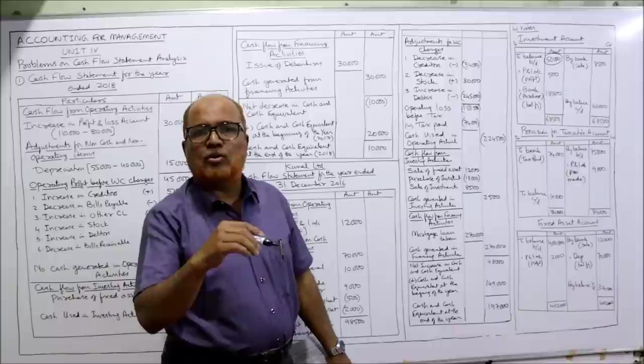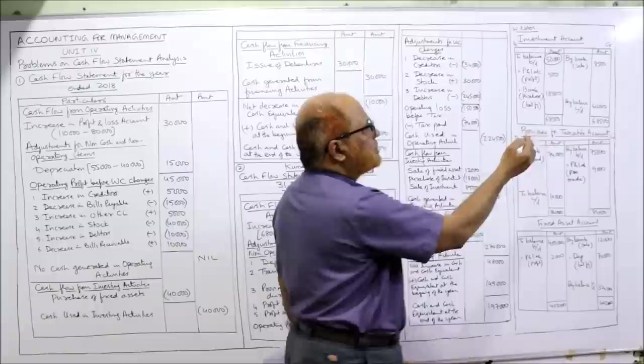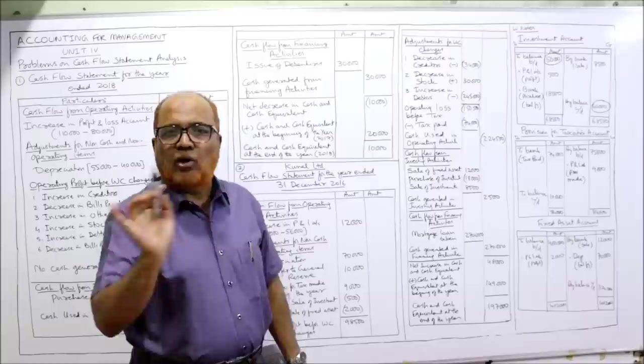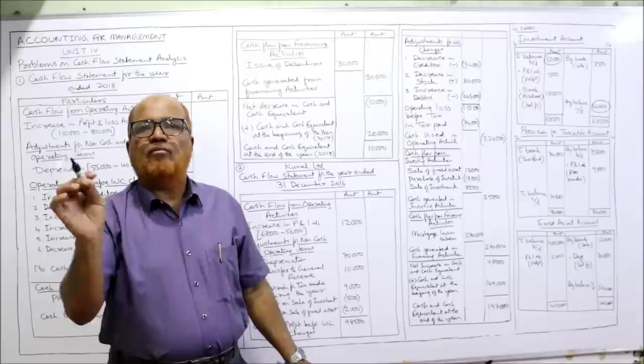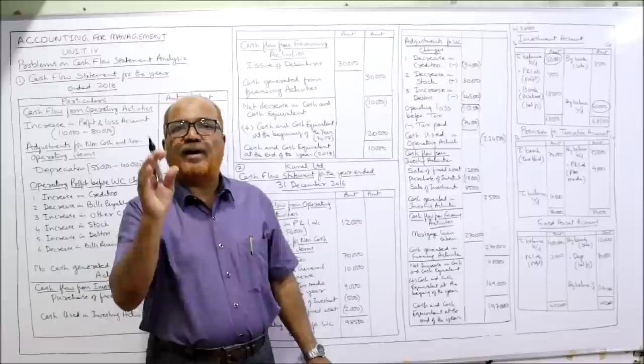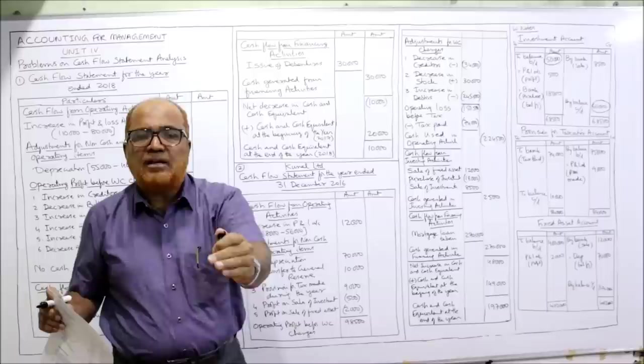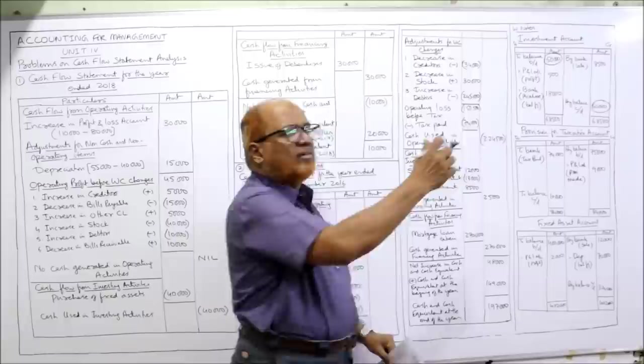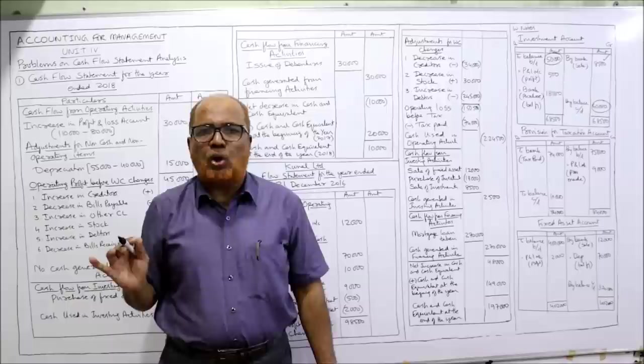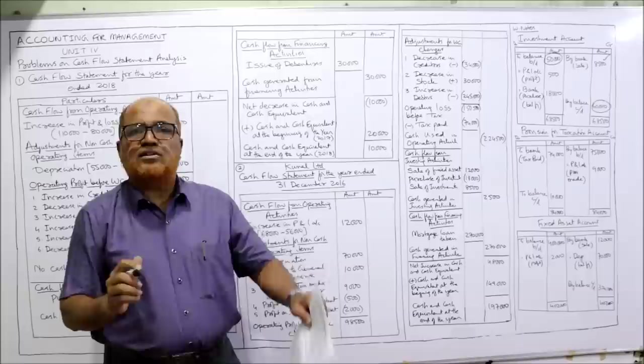Credit side: closing balance carried down 60,000. Opening balance on debit side, closing balance on credit side. Investment costing 8,000 was sold for 8,500 — so 500 rupees profit. When we sell the investment: bank account debit, investment account credit. So investment account credit by bank sale 8,000. The 500 profit should be taken on the debit side — entry: investment account debit, profit and loss account credit.